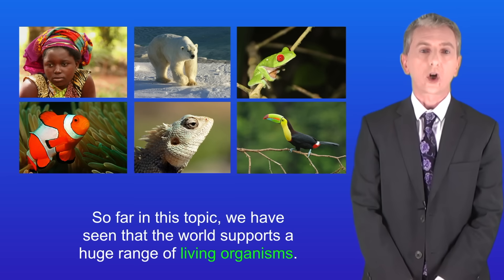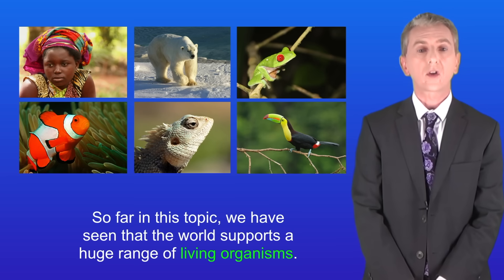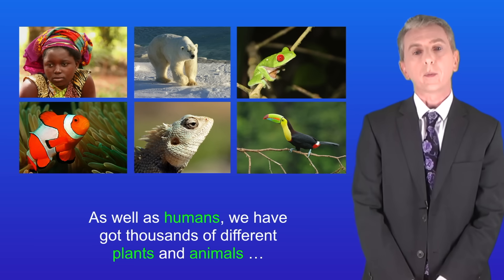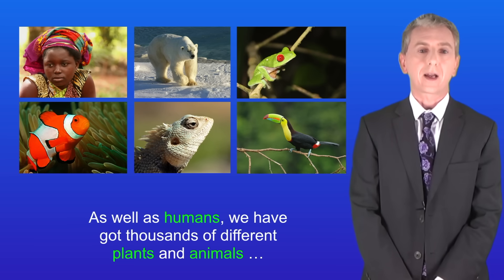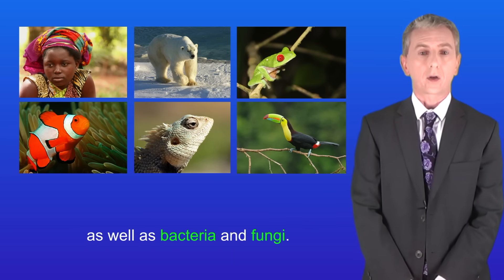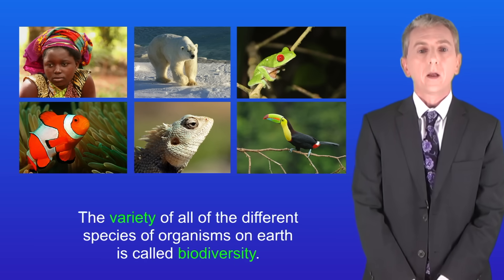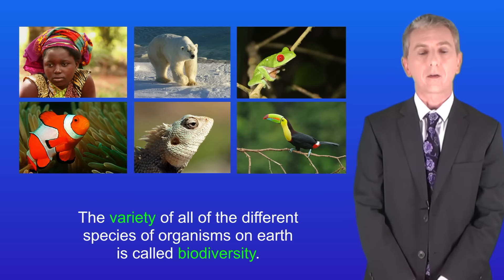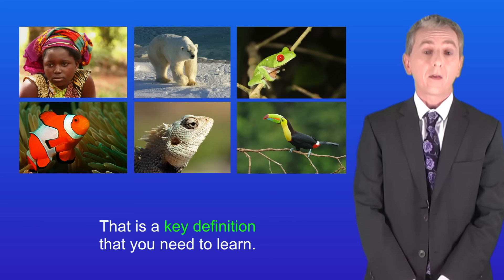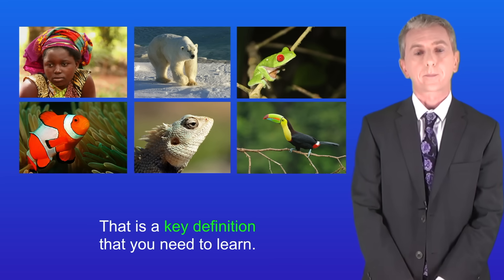So far in this topic we've seen that the world supports a huge range of living organisms. As well as humans we've got thousands of different plants and animals as well as bacteria and fungi. The variety of all of the different species of organisms on earth is called biodiversity, and that's a key definition that you need to learn.